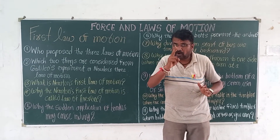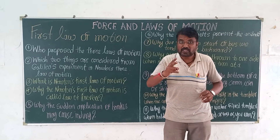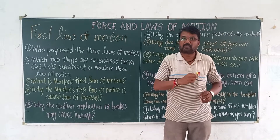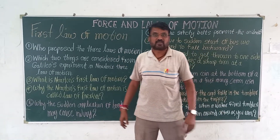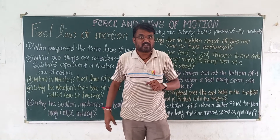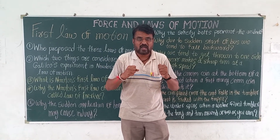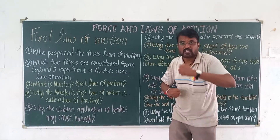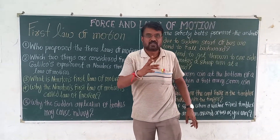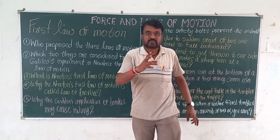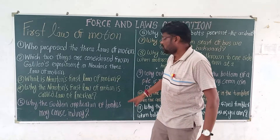Which two important things did Newton take from Galileo's experiment for his three laws? The first thing is force and the second thing is motion. These are the two things Newton took from Galileo's experiment.